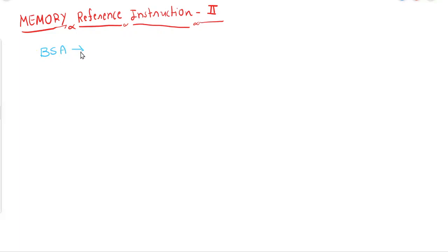The full form of BSA is Branch and Save return Address. This instruction is used whenever we normally call a user-defined function in a higher level programming language. For better understanding, let me prepare a memory map so you can see it and understand.